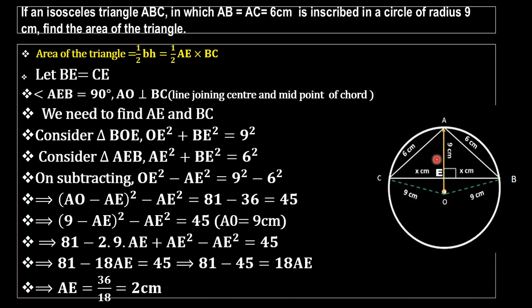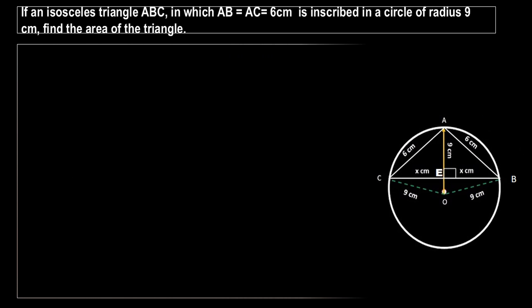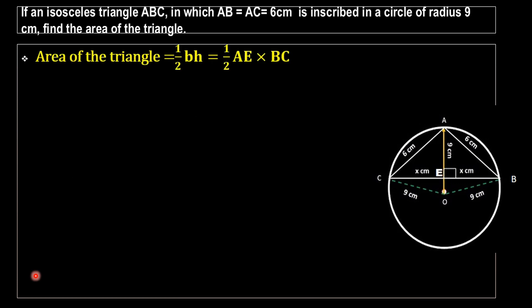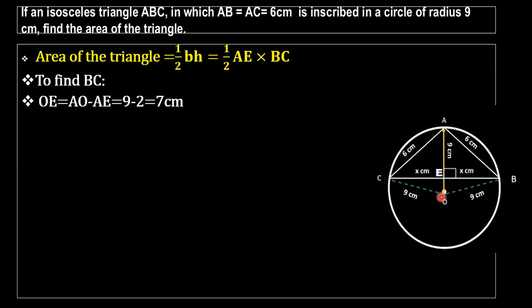So we get AE as 2 cm. Next, we have to find BC. Since BC equals BE plus CE, which equals 2X, we need to find BE. First, OE equals AO minus AE, which is 9 minus 2, equal to 7 cm. So OE equals 7 cm.